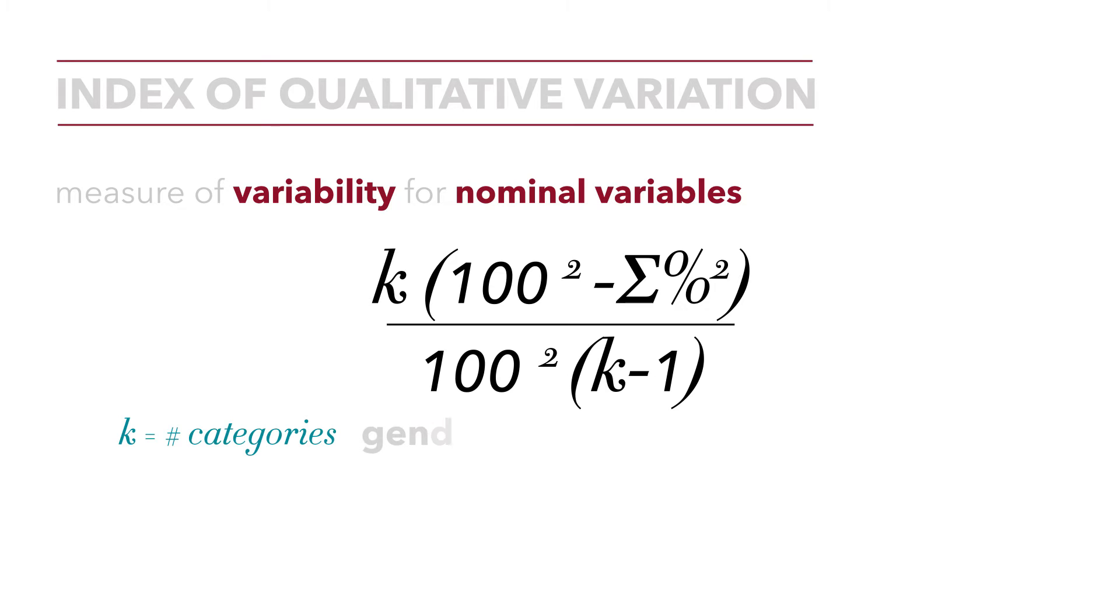In this formula, k simply represents the number of categories of our variable. So if we had a variable gender with categories male and female, that would be two categories and k would equal 2. The sum of the percentages squared are simply the percentages that each category represents of the whole, squared and summed.